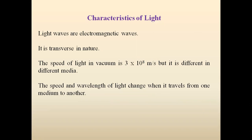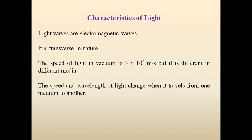First, the characteristics of light: light is an electromagnetic wave and it is transverse in nature. We already know that the speed of light in vacuum is 3 into 10 to the power 8 meters per second, but it is different in different mediums. The speed and the wavelength of light change when it travels from one medium to another medium.